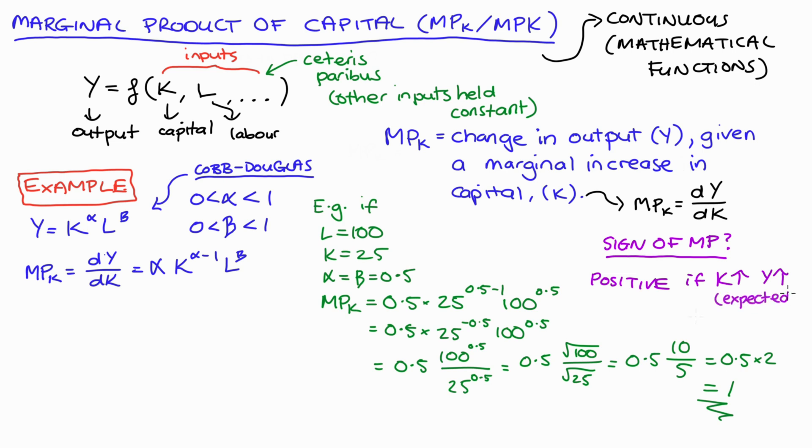Now this would be the expected sign—it's fairly intuitive that if you add more input into your production process, you get more output. You could possibly get a negative marginal product of capital, which would mean that as we add more capital our output would decrease. This would not be the expected sign, but I suppose it's still possible, and that's what it means if you get a negative sign.